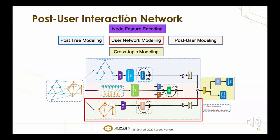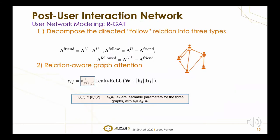The second part is user network modeling. The user network is a directed network which decomposes directed relations into three types: only-following, only-followed, and friend relations. We design a relation-aware graph attention network based on GAT, using a type-specific vector to distinguish edge types, where the friend relation vector equals the sum of the following and followed vectors.